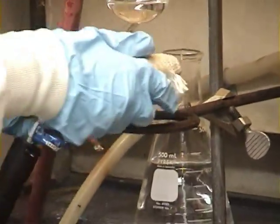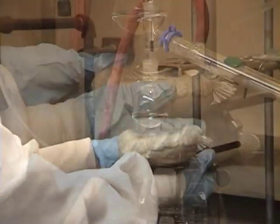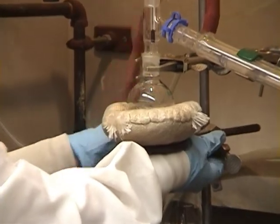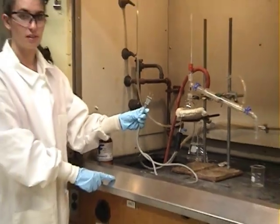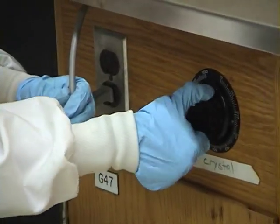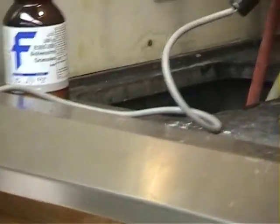An iron ring is used to support the heating mantle, which is moved upward to snugly cup the round bottom flask. The cord of the heating mantle is tucked under the ledge of the hood, and then plugged into the outlet under the ledge, where it can be controlled by the variac dial.